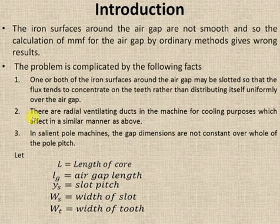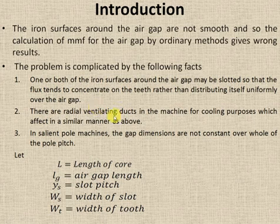The next fact is radial ventilating ducts. These are actually provided for cooling purposes. Radial ventilating ducts are small gaps provided in between the stacks of armature and the air gap. Due to the presence of radial ventilating ducts, the flux distribution is not uniform in the air gap.